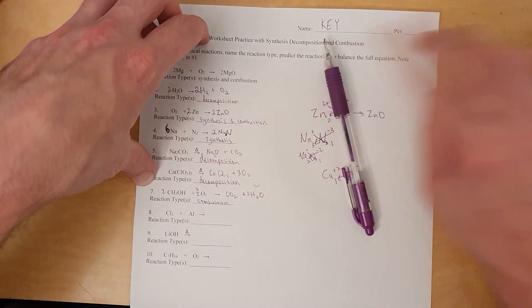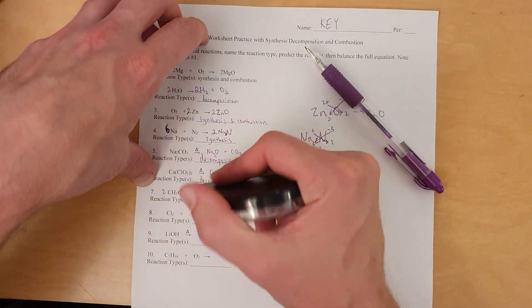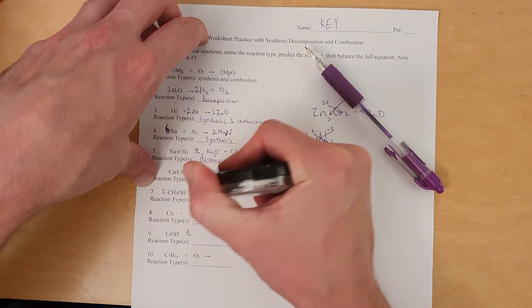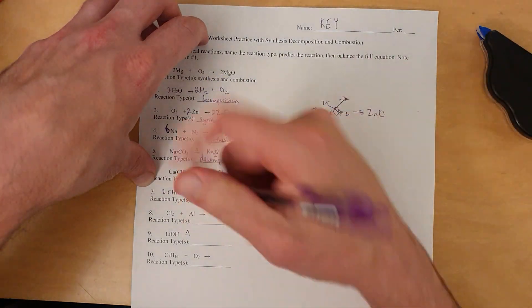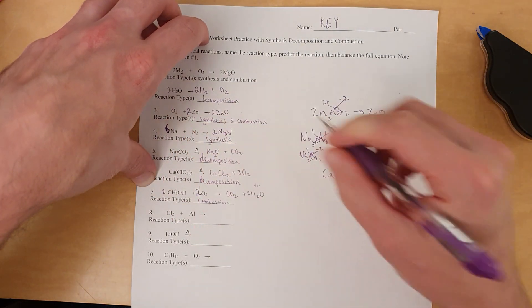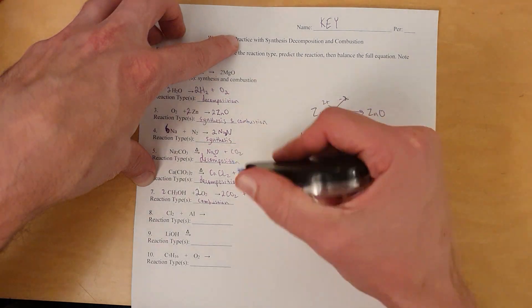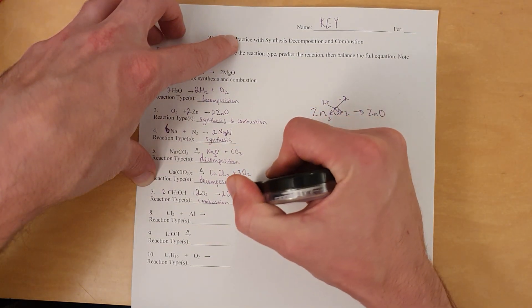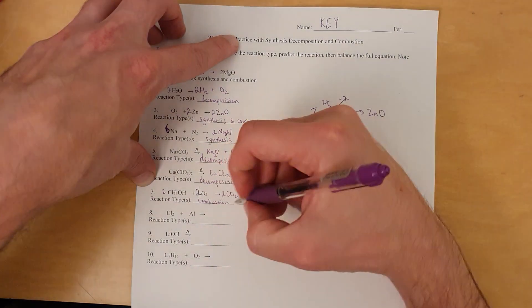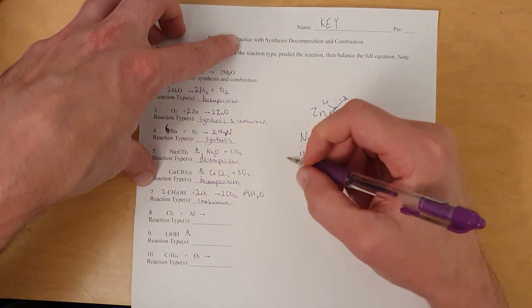So, 2, and then 3 halves becomes 3, because I'm timesing everything by 2, and then times this by 2, and then times this by 2 to make, let's see, 2 H2Os becomes 4 H2Os. And that should work.